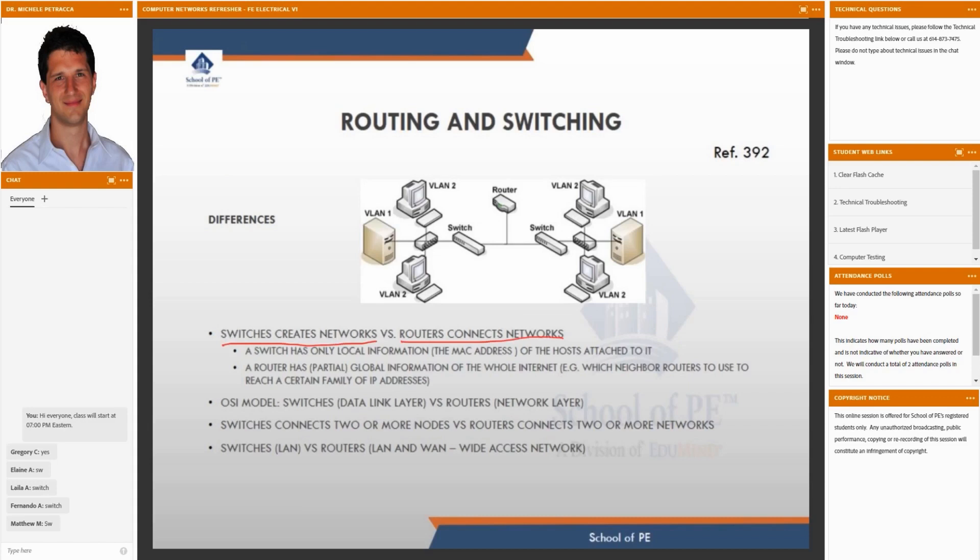A switch is typically only the local information by the local area network, which is the MAC address, what we also call L2 address. While a router has some sort of global information of the entire internet and reasons in terms of IP addresses, those are the L3 addresses.